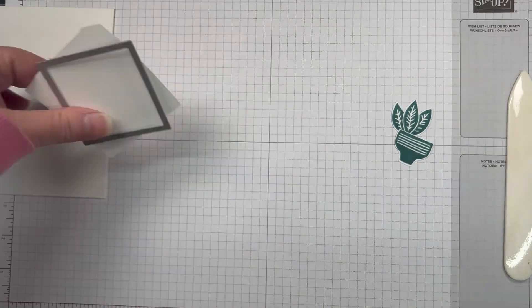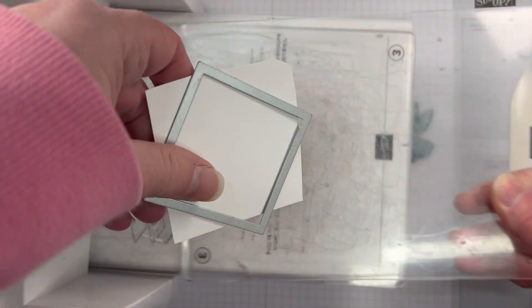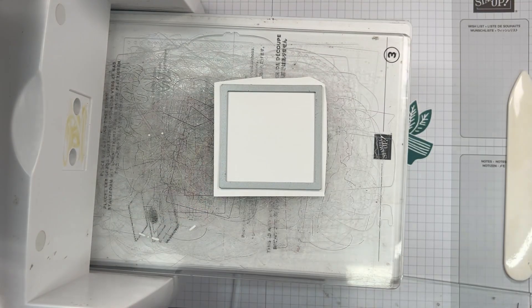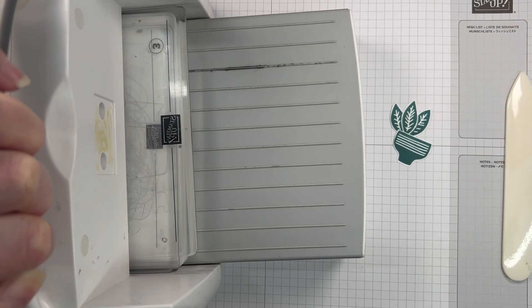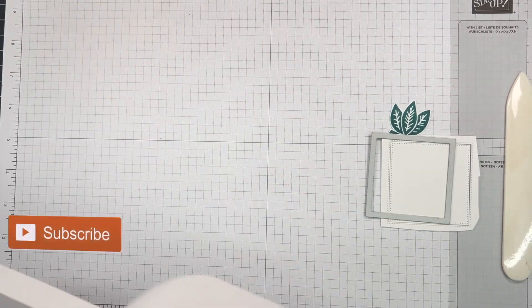So we're going to do a quick die cut of that one, and I'm going to do some ink blending as well. I wanted it to really pop off that shape.